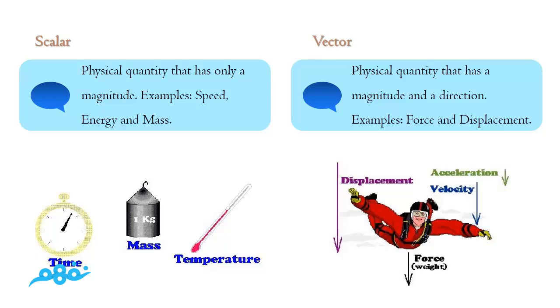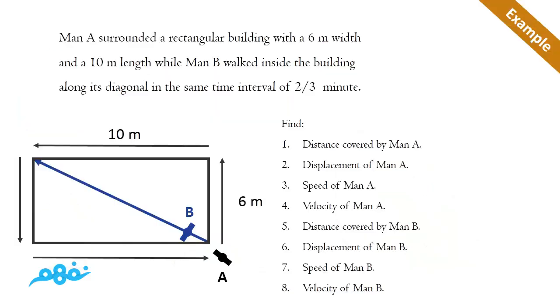While the vector is a physical quantity that has a magnitude and a direction. For example: force, displacement, velocity, and acceleration. Examples are better to deliver the information. Like here, Man